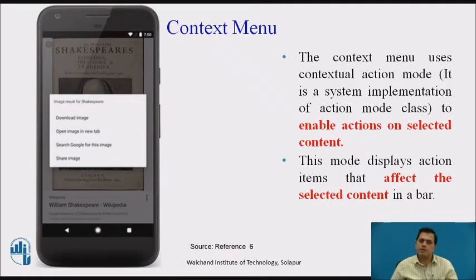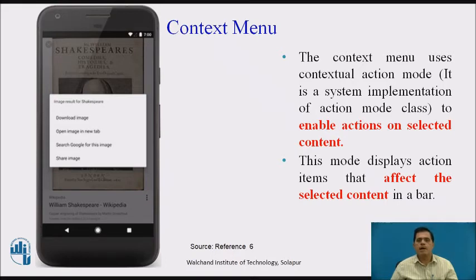The second diagram shows the context menu. The context menu uses contextual action mode — a system implementation of the ActionMode class — to enable actions on selected content. This mode displays action items that affect the selected content in a bar. The developer uses the context menu when users need to act on selected content in the app.